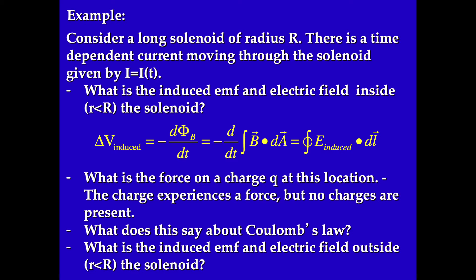I want to consider the following problem. This is a problem we did in class, but I want to spend a little bit more time on it here. Suppose we have a long solenoid of radius R, and there's a time-dependent current moving through the solenoid — we'll call it I as a function of T. What we want to do is look at the induced EMF and the induced electric field inside the solenoid, the force on a charge at this location, and the field outside the solenoid.